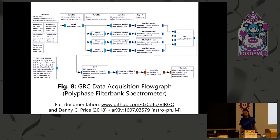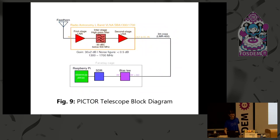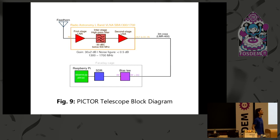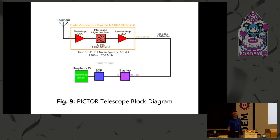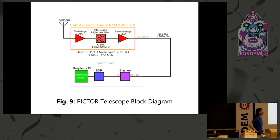And of course it's fully open source, for this flow graph. So how does it work? The signal enters the Fidhorn, gets amplified, filtered, and then amplified again. This is a two-stage low noise amplifier. It runs through a three-meter low-loss coaxial cable, then through a Faraday cage to reduce spurious emissions to the telescope. It runs through a bias-T and SDR, and of course a Raspberry Pi.